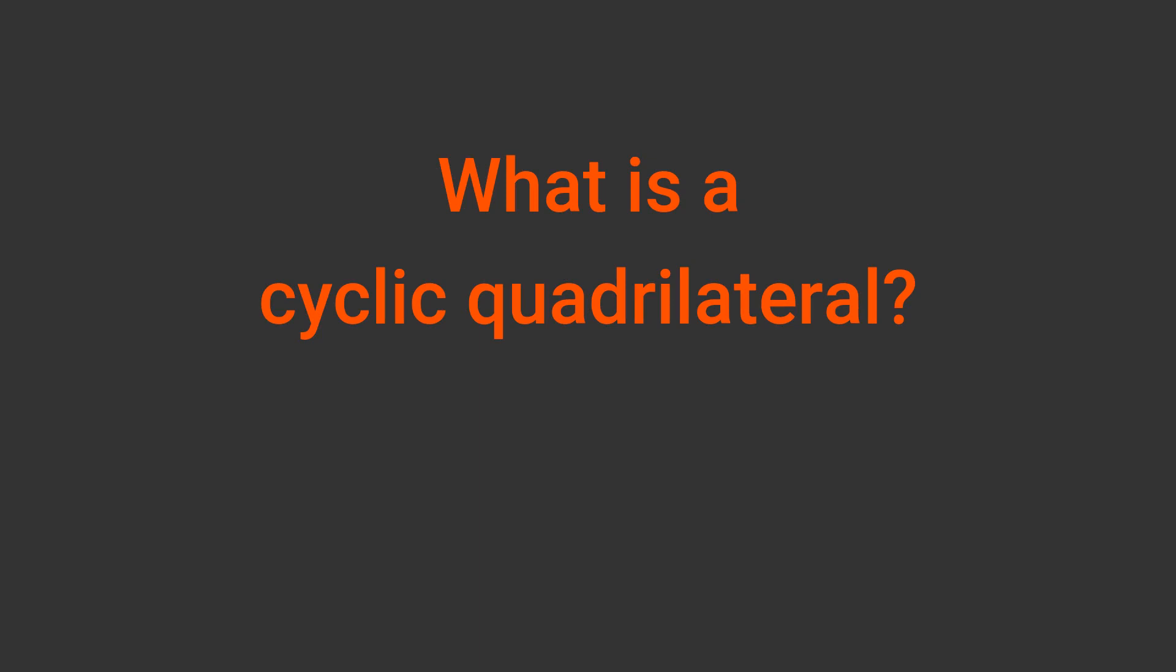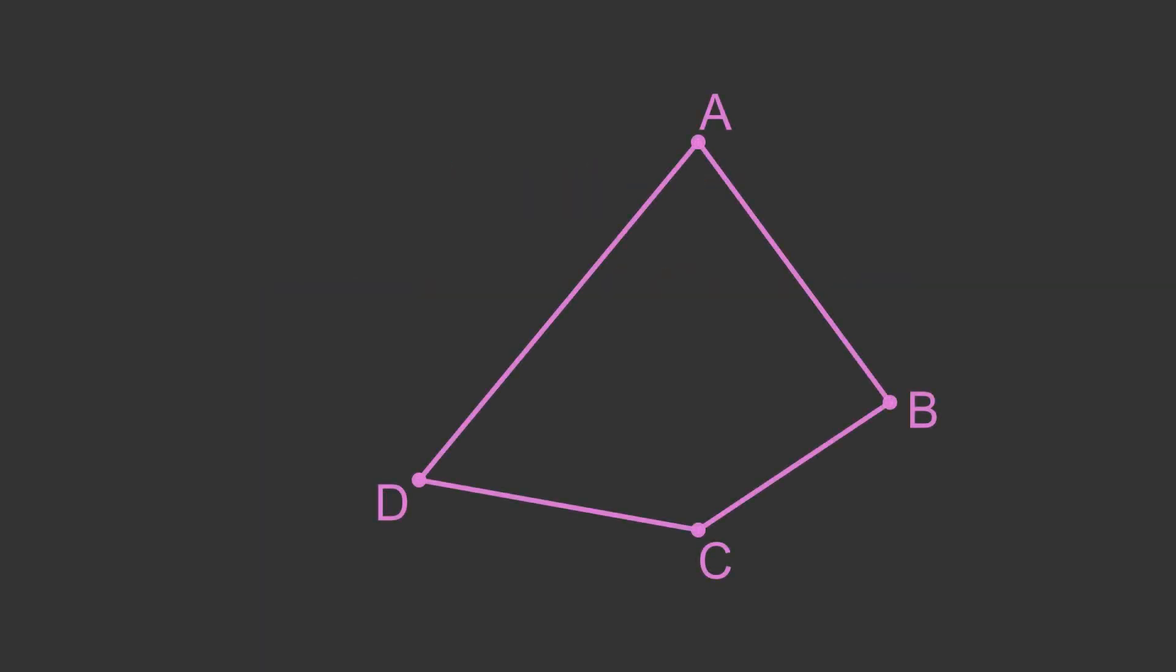But first of all, what is a cyclic quadrilateral? Well of course we know that a quadrilateral is a shape with 4 sides and 4 corners. Here is an example quadrilateral.